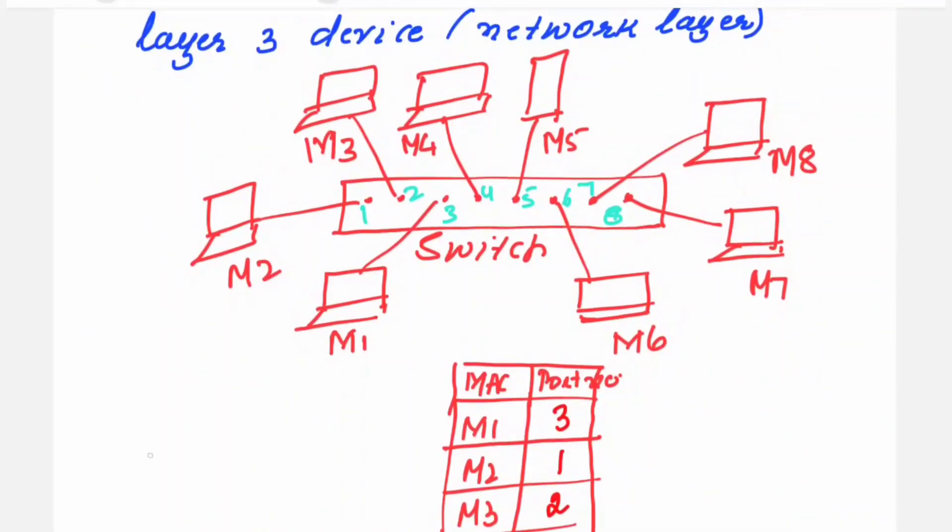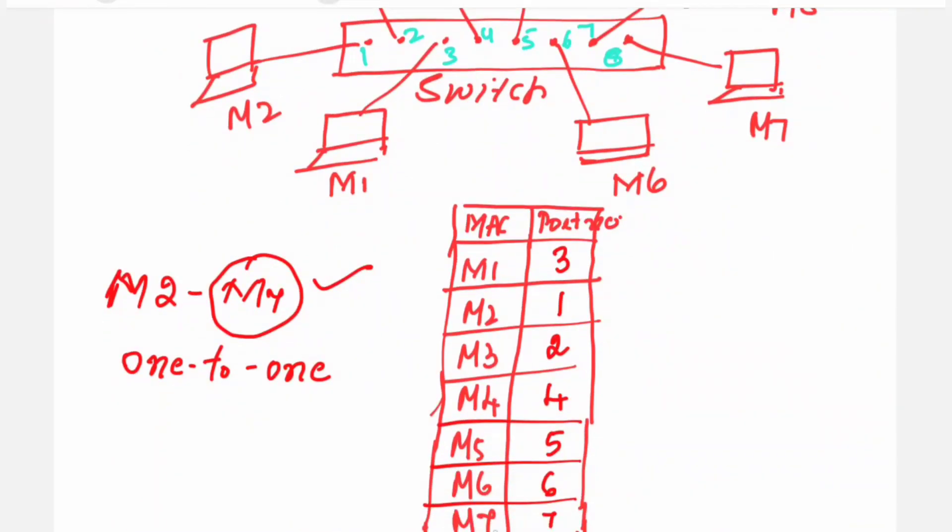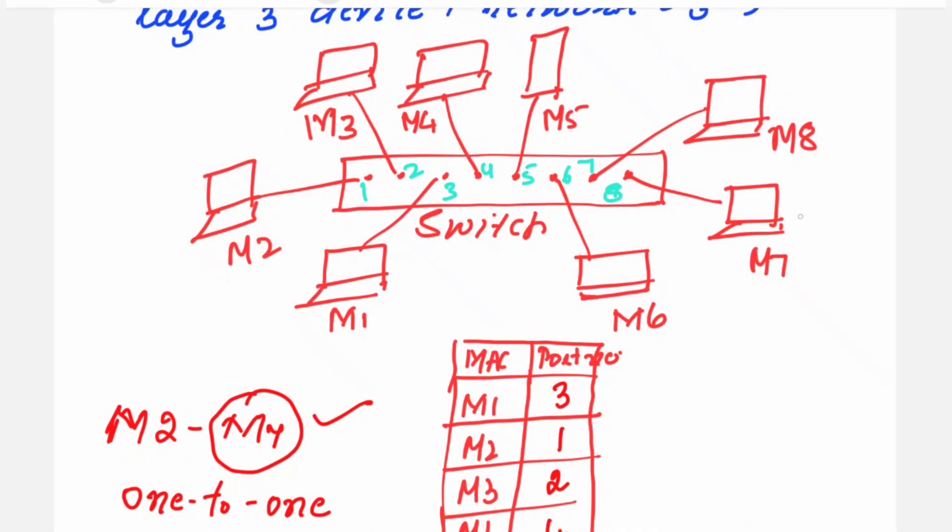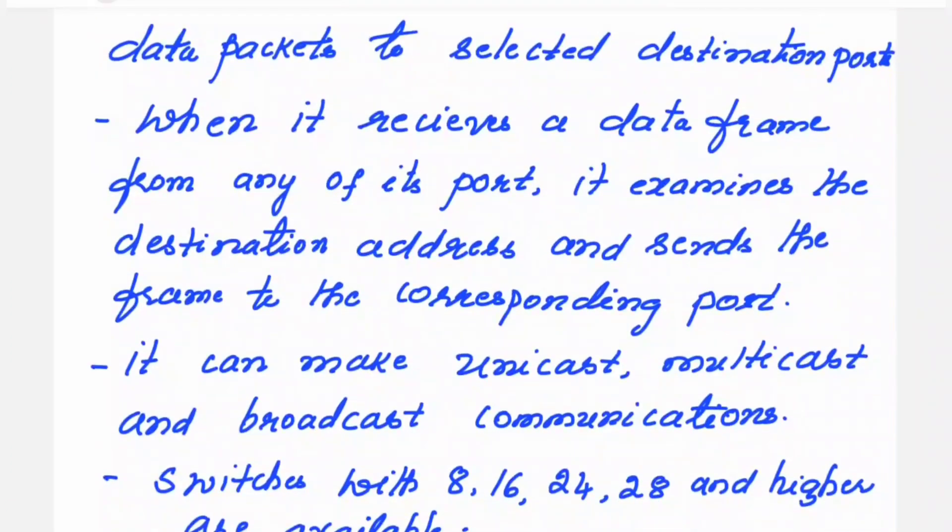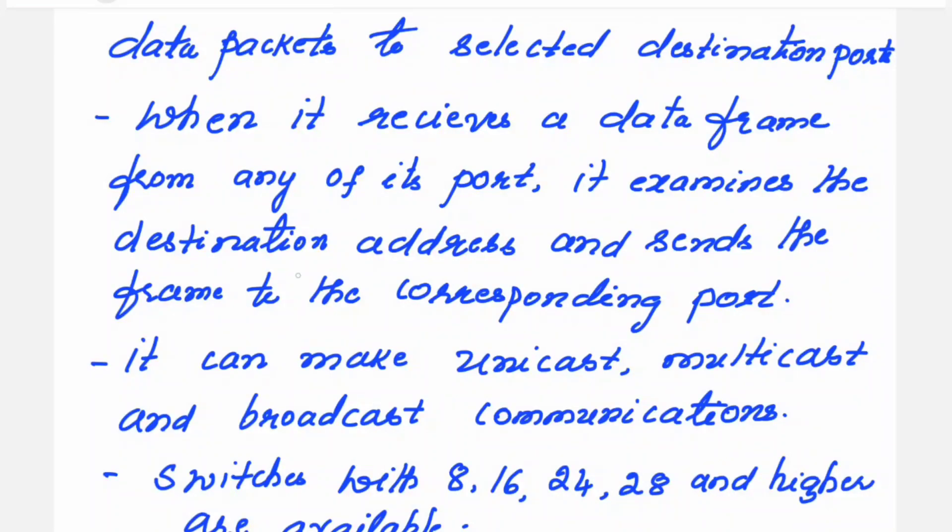Now suppose if any machine like for example M2 wants to send the data or information to M7, then the switch is going to send that data to the intended recipient only. Type of transmission is unicast, that is 1 to 1. It will refer this table and see that M7 is connected to port number 7. It will send the data only to port number 7. This type of network we call as LAN, local area network. When it receives the data frame from any of its port, it examines the destination address and sends the frame to the corresponding port.